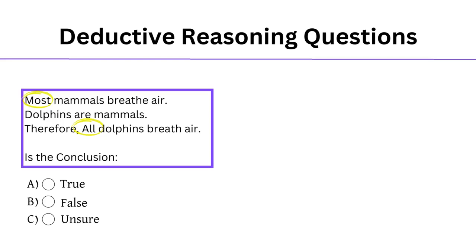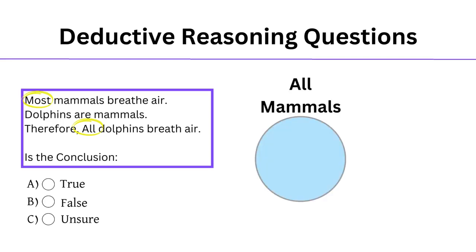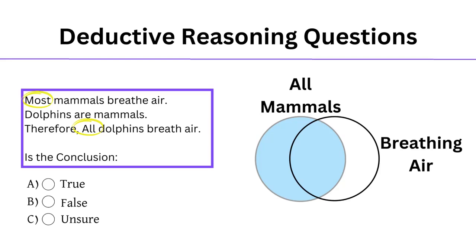Most mammals breathe air. So our first circle is all mammals, and our second overlapping circle will be breathing air. The second sentence is: dolphins are mammals. So dolphins fit entirely into the mammal circle. And the conclusion: all dolphins breathe air. Looking at our Venn diagram, we know all dolphins are mammals and most mammals breathe air. The problem is that our conclusion says 'all,' but our diagram shows all with some exceptions. This may not seem important, but these exceptions make all the difference, and lead our answer to be unsure.